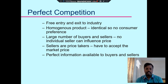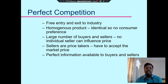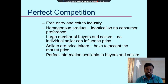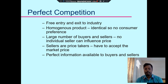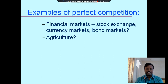For example, toothpaste brands like Colgate, Himalaya — these are homogeneous products. There are a large number of buyers and sellers with no restriction on entry and exit. In perfect competition, sellers are price takers — they accept the market price. Perfect information is available to both buyers and sellers.